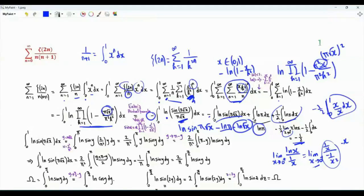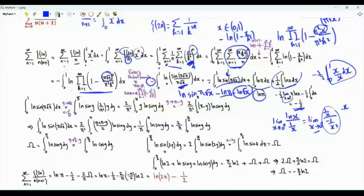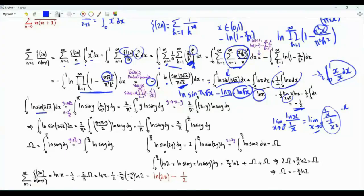The last step is to evaluate the remaining integral. We use the substitution y equals pi times the square root of x. When x is 0, y is 0; when x is 1, y is pi. Then dx equals 2y dy over pi squared. The integral becomes 2 over pi squared times the integral from 0 to pi of y times ln sine y.